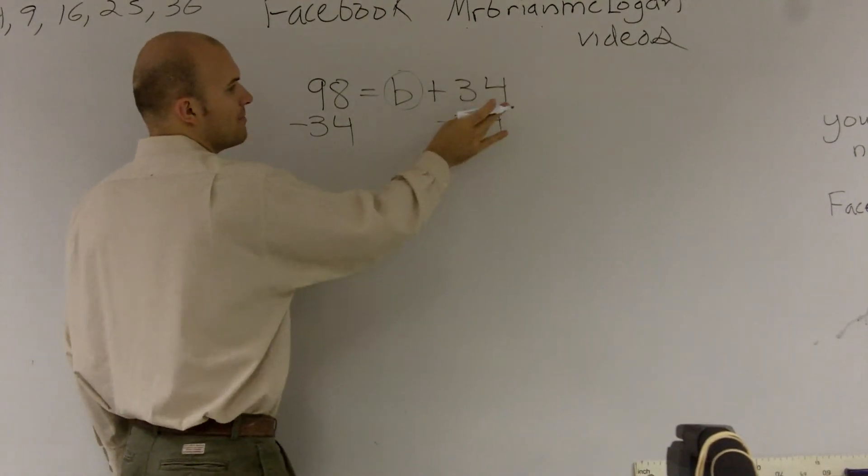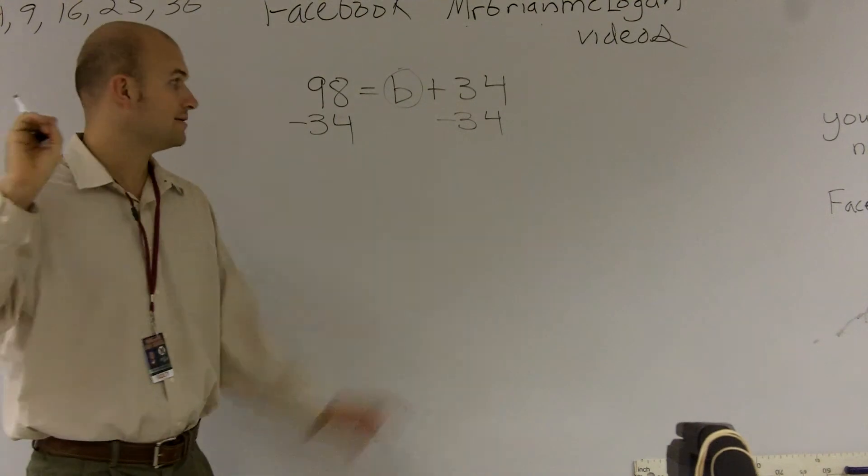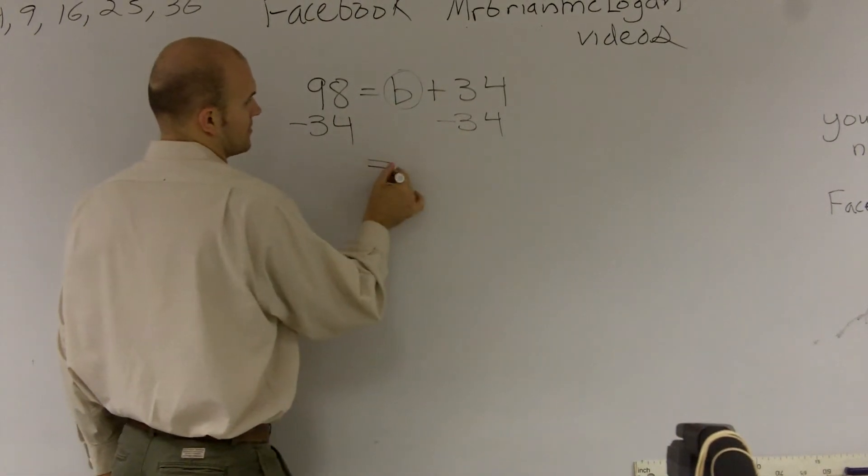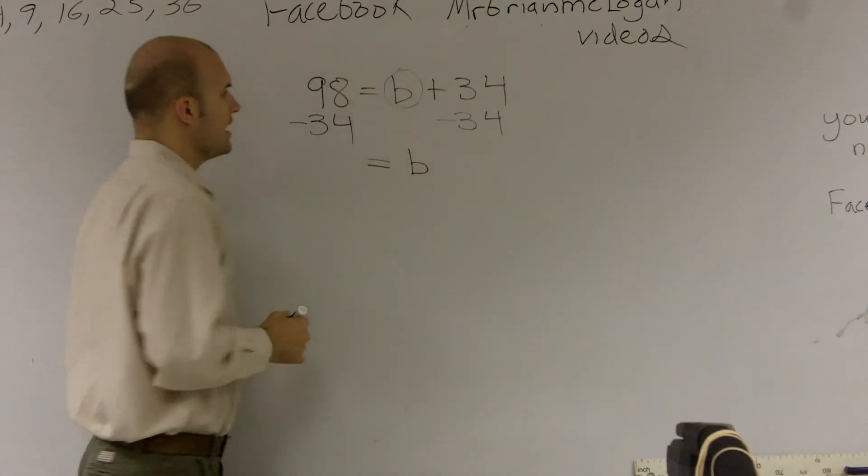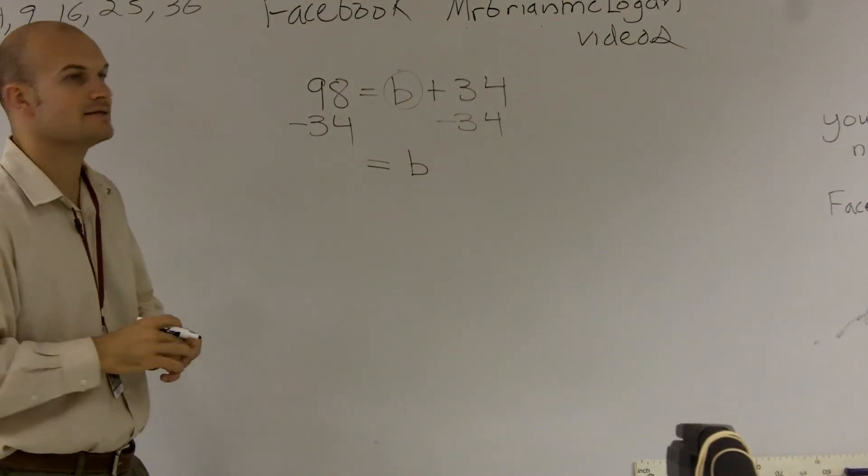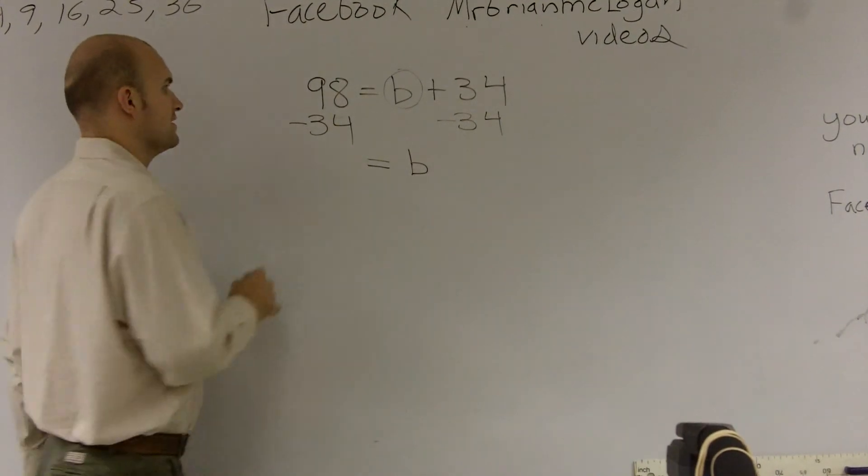So 34 minus 34, that gives you 0, right? Well, b plus 0 is going to be b. And then 98 minus 34. That's going to give you 64.